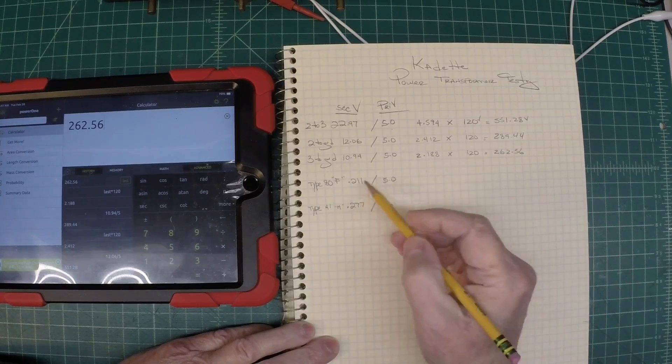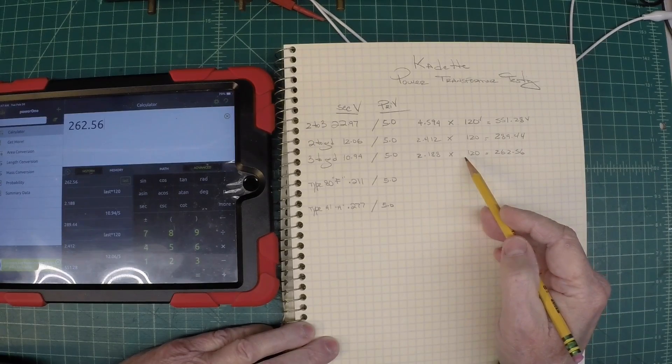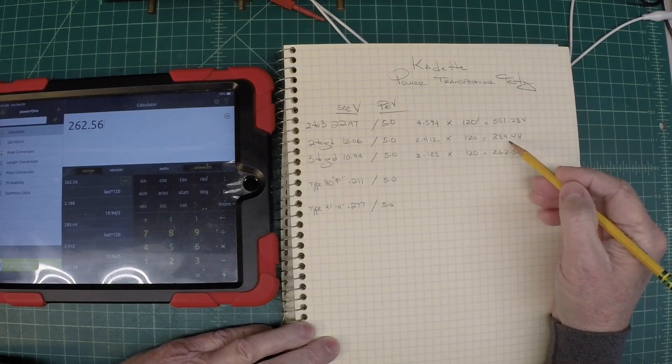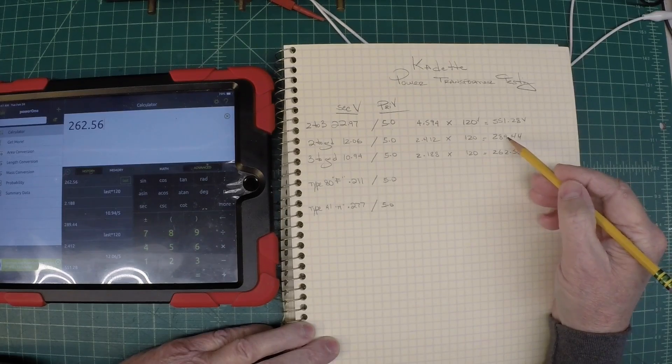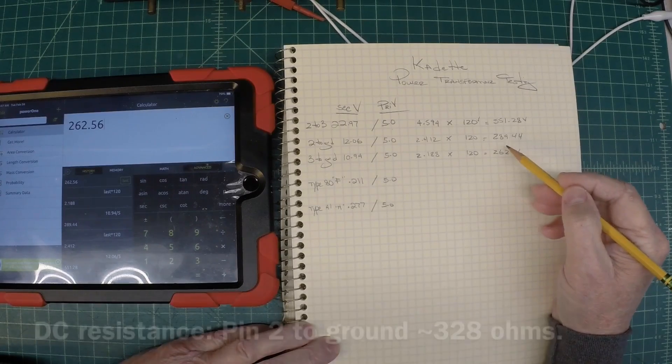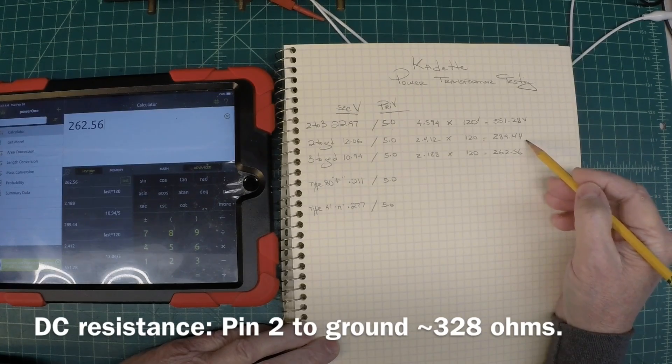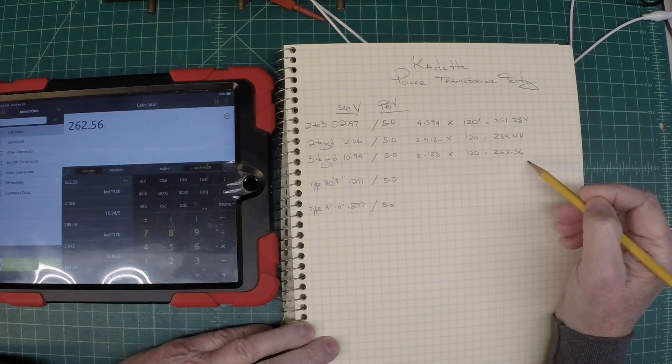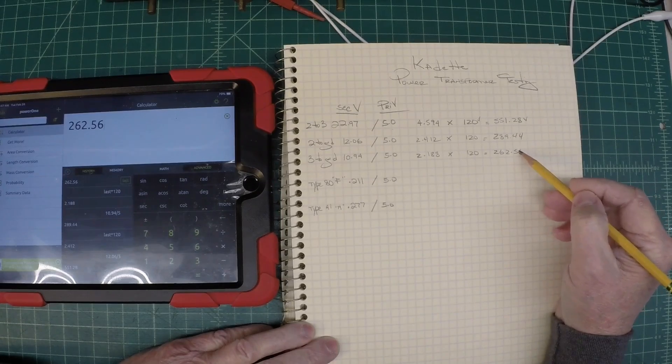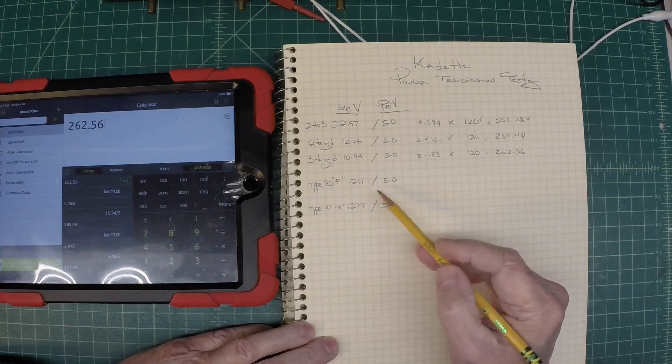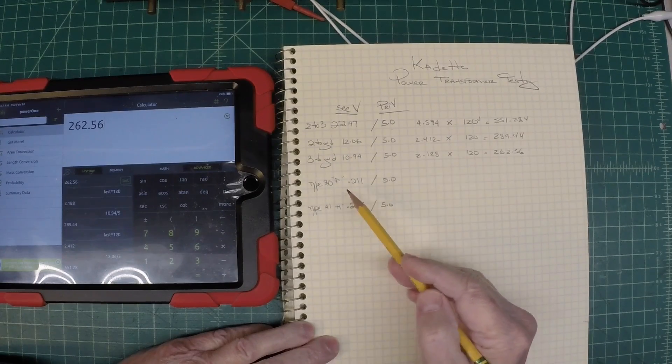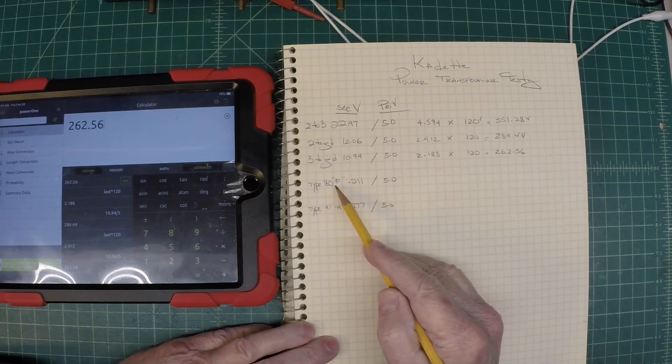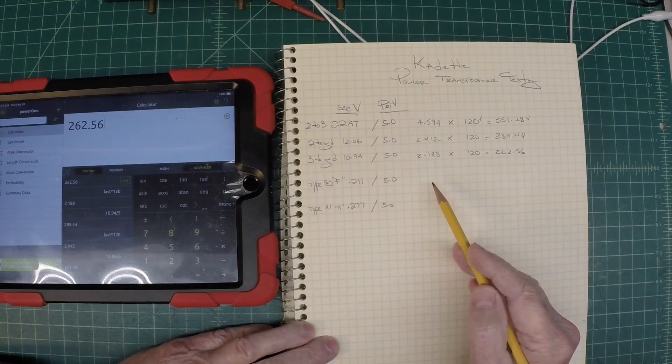Now I've got all the voltages for the high voltage side calculated. The concerning one is the difference between two to ground and three to ground, which ties back to the DC resistance measurements I took. We'll be mindful of that and see if it creates issues when we put the transformer under load. Let's finish the calculations for the filament and heater string. This should be 6.3 volts when we do the calculation, and the filament for the type 80 is 5 volts.